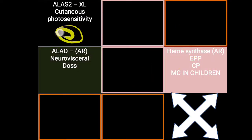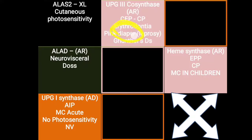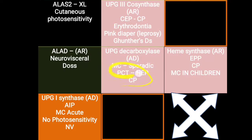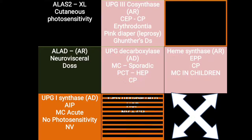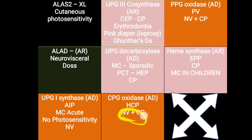ALA synthase 2 also mostly presents with cutaneous photosensitivity, similar to erythropoietic protoporphyria. ALAD (ALA dehydratase) enzyme deficiency is a very rare variety called Doss porphyria. AIP is the most common acute porphyria — acute intermittent porphyria. CEP is due to deficiency of CPG3 co-synthase enzyme. CPG decarboxylase deficiency leads to PCT, the most common sporadic variety in adults. CPG oxidase and PPG oxidase represent hepatic varieties along with AIP, and both present with neurovisceral as well as cutaneous photosensitivity.